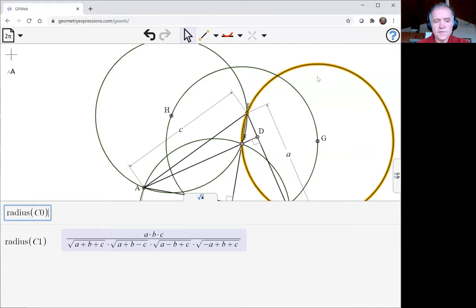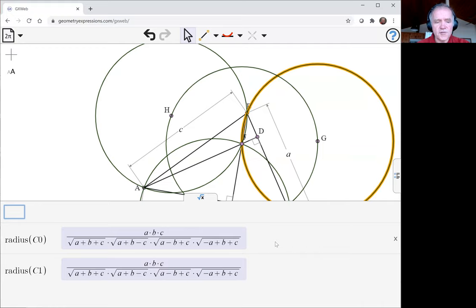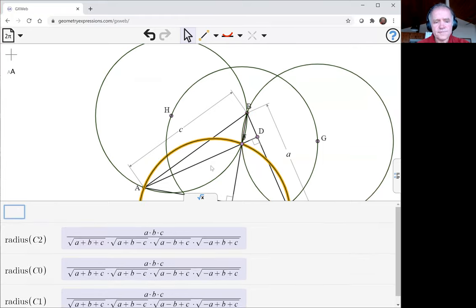The radius of this circle. Let me see. Is it identical? And radius of this circle. For that matter, what is the radius of the circumcircle? It looks suspiciously similar.